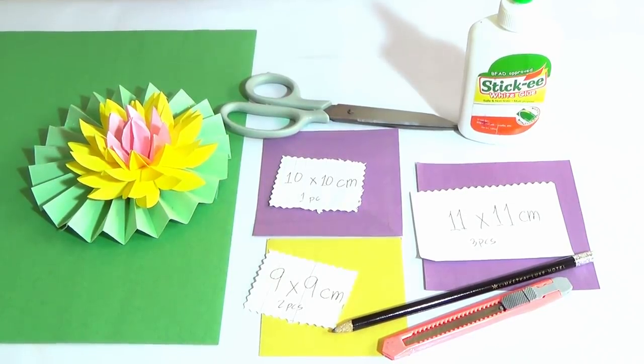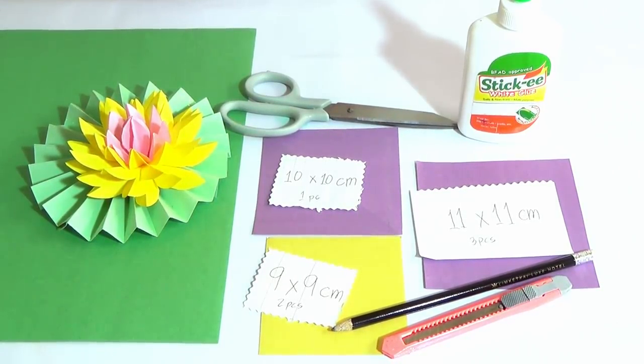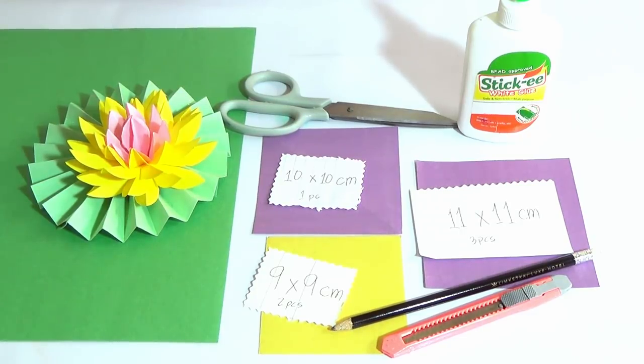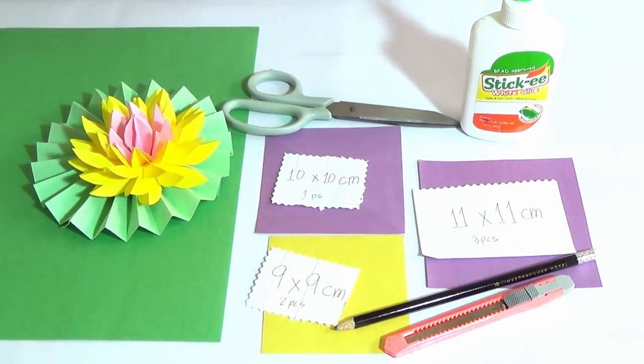To make this lotus flower, we need scissors, kata, pencil, white glue, green paper 24 by 30 cm, 6 squares of paper, 2 pieces of 9 by 9 cm, 1 piece of 10 by 10 cm, and 3 pieces of 11 by 11 cm. The two smallest pieces are for the middle of the flower and need to be a different color.